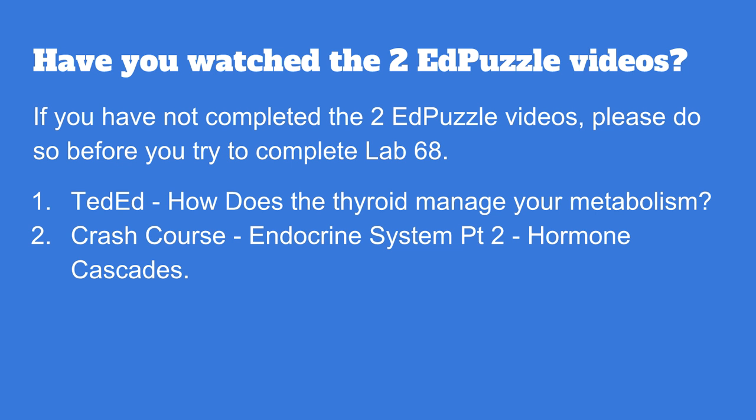The second one, the Crash Course, talks about hormone cascades. Thyroxine, which is what it's going to be focused on in this Lab 68, is produced as a result of a cascade, meaning one hormone is produced by one gland or area, which signals another one to be produced, which signals a third one to be produced, which then cycles back and then can stop or interrupt or inhibit the first one. So please watch these because they will help you to better understand what this lab is getting at, and you'll be more successful.